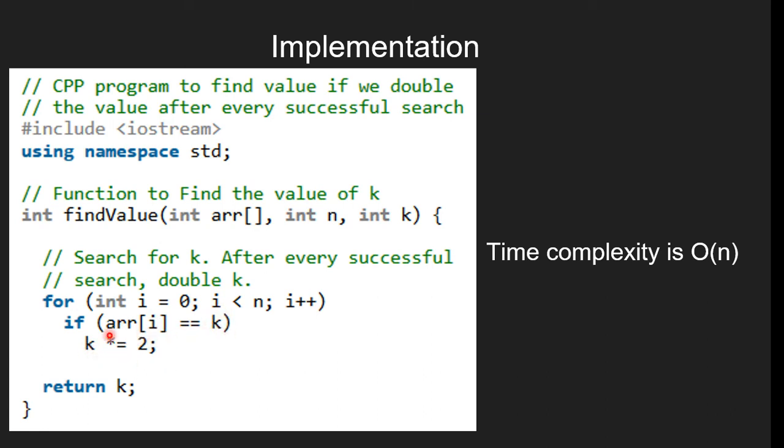we double the value of k. If k is not found, we return its value. Otherwise, we continue searching for the next element. Finally, we return the final value of k.